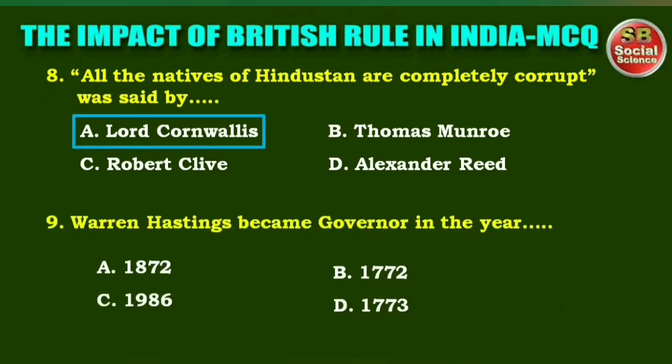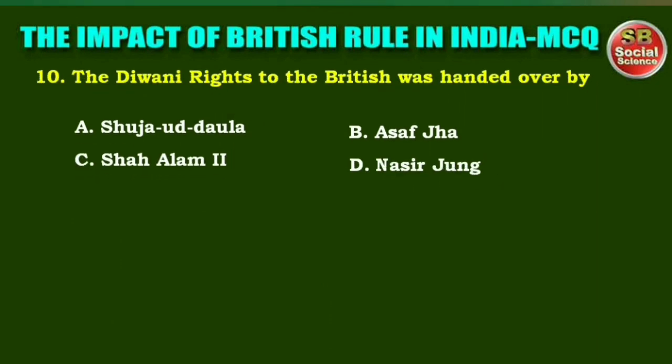Next question: Warren Hastings became governor in the year — options are: 1872, 1772, 1986, 1773. The right answer is option B: 1772. Next question: The Diwani rights to the British were handed over by — options are: Shuja-ud-Daula, Asaf Jaan, Shalam Second, Nasir Jang. The right answer is option C: Shalam Second.